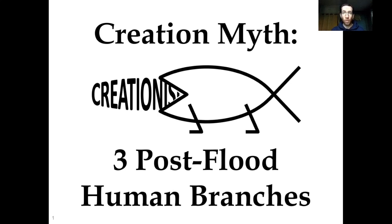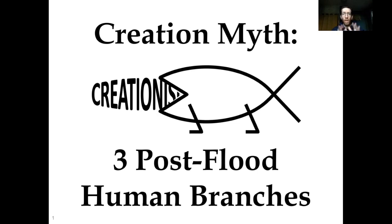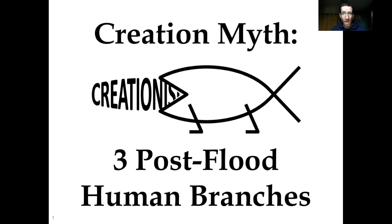Hello everybody, and welcome back to Creation Myths. Today we are going to talk about the myth that there are three post-flood branches in the human phylogeny, specifically the mitochondrial phylogeny. In other words, there are three clades of human mitochondrial DNA. That's our myth for today.